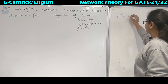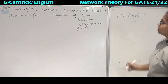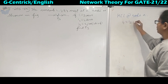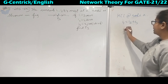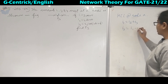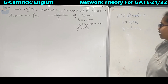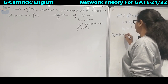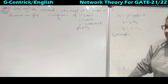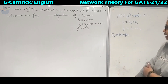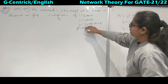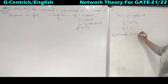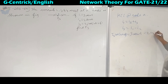Applying KCL at node A: I1 is incoming, so I1 = I2 + I3. Rearranging, I3 = I1 minus I2. Substituting values: I3 = 3·cos(ωt) minus 4·sin(ωt). We do not have to worry about the angle since they have only asked for the magnitude of I3.